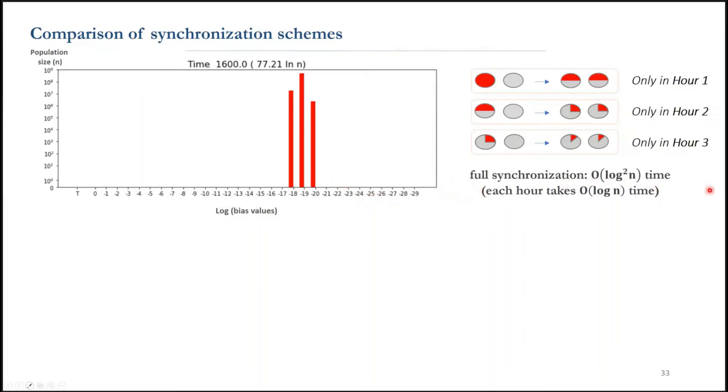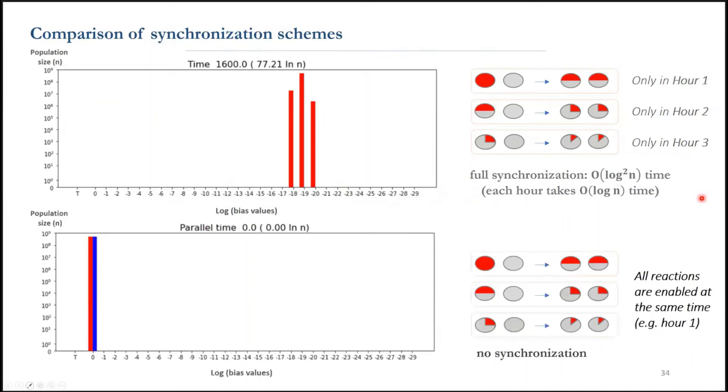How can we make this faster? We want to get down to log n time complexity. The fundamental question is to ask if synchronization is even necessary. For example, we could allow all the cancel and splits to happen simultaneously. So let's try it.